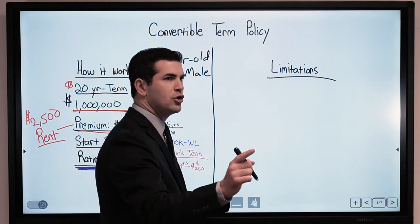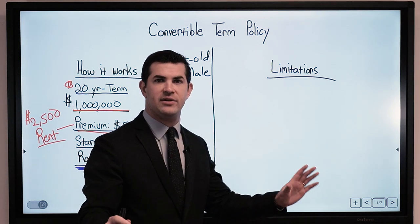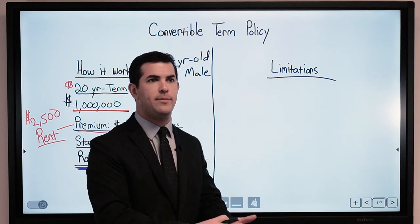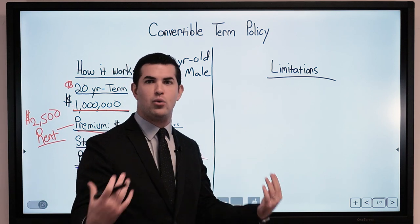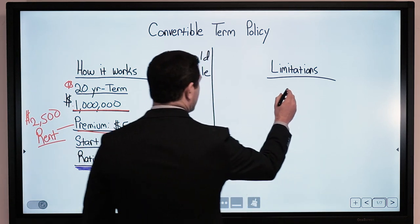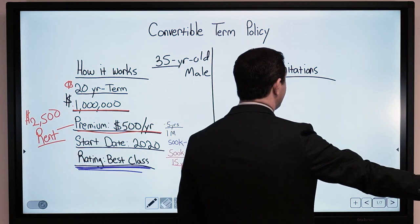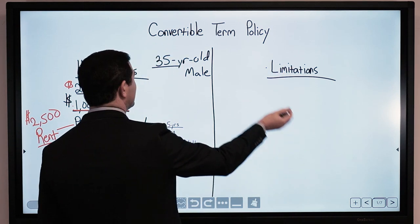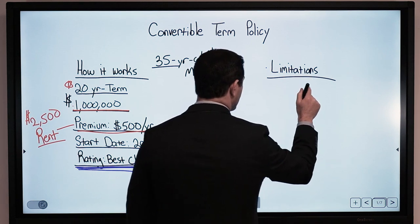What happens with a convertible term policy is first, whenever I convert it to whole life, it's typically company to company, it's got to be within the same insurance company. So if I take out a 1 million dollar term policy with company A, when I convert it 5, 10, 20 years down the road, it has to be with company A. There are some programs out there that allow you to take a term policy and flip it over to a whole life with another carrier, typically within the first 3 to 5 years depending on companies and limitations, but that's a bit different than a convertible term.